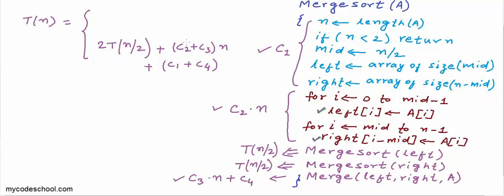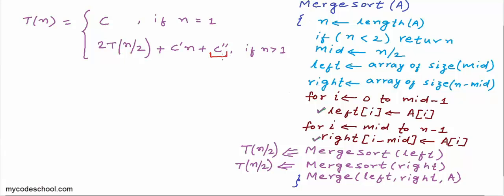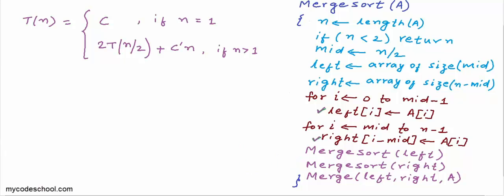So for n greater than 1, T(n) equals 2·T(n/2) plus some constant times n (combining all the linear costs). When n equals 1, there is only one simple comparison and a return, so the cost is some constant. We can simplify this to: T(n) = 2·T(n/2) + c'·n for n > 1, and T(1) = c. For large n, the constant term c'' is negligible compared to c'·n, so we drop it and solve this recurrence.